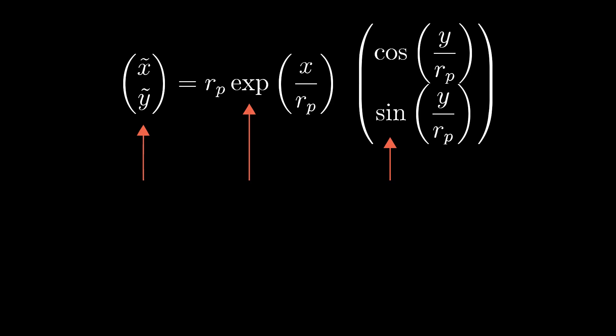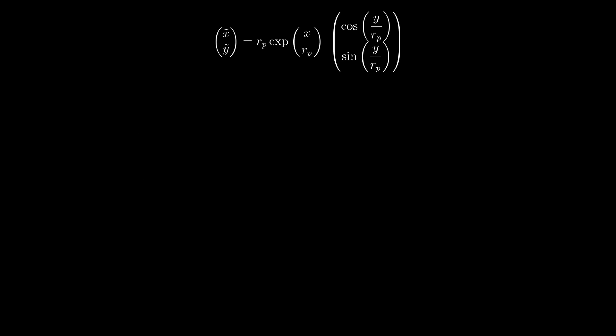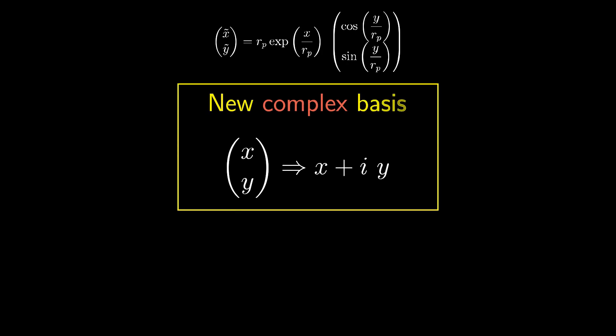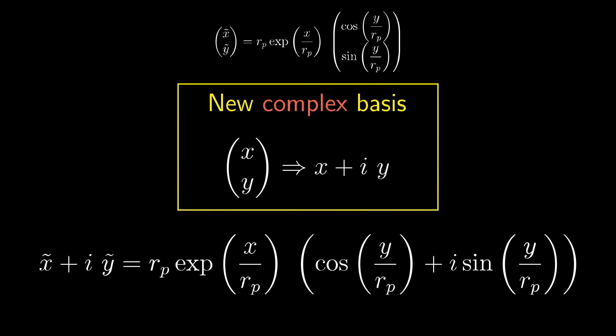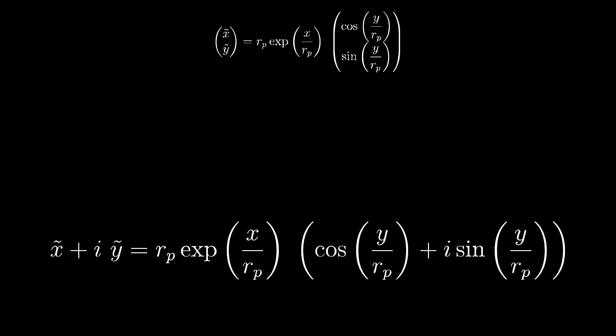Instead of a 2D vector let's write this equation in a complex basis. Actually this doesn't really seem much simpler. But maybe this part here sounds familiar to you. This section can be simplified using Euler's identity.